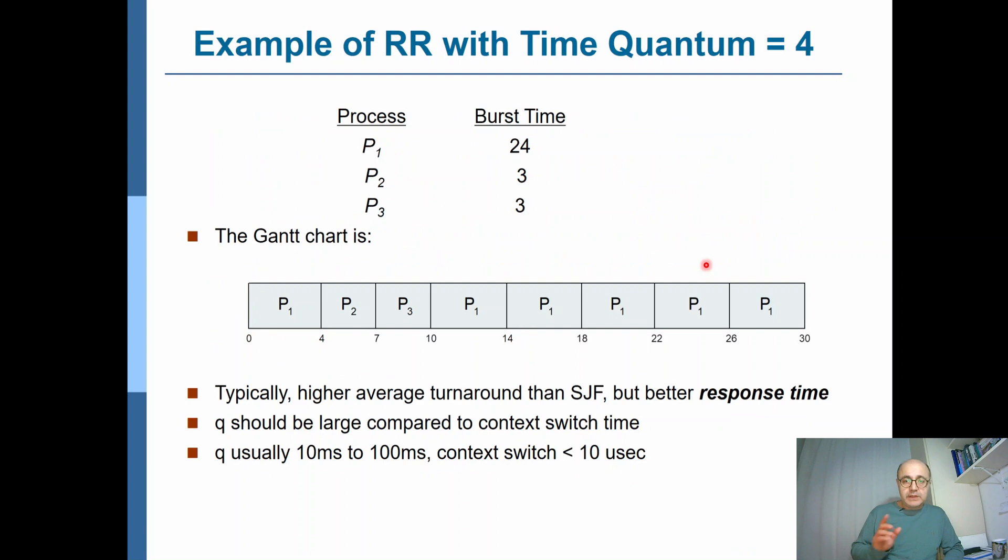Let's have a look at an example. We're assuming that the length of our time quantum is four milliseconds. And we have three processes P1, P2, P3, all available at t equals zero, with burst lengths of 24, 3, 3, as one of the previous examples.